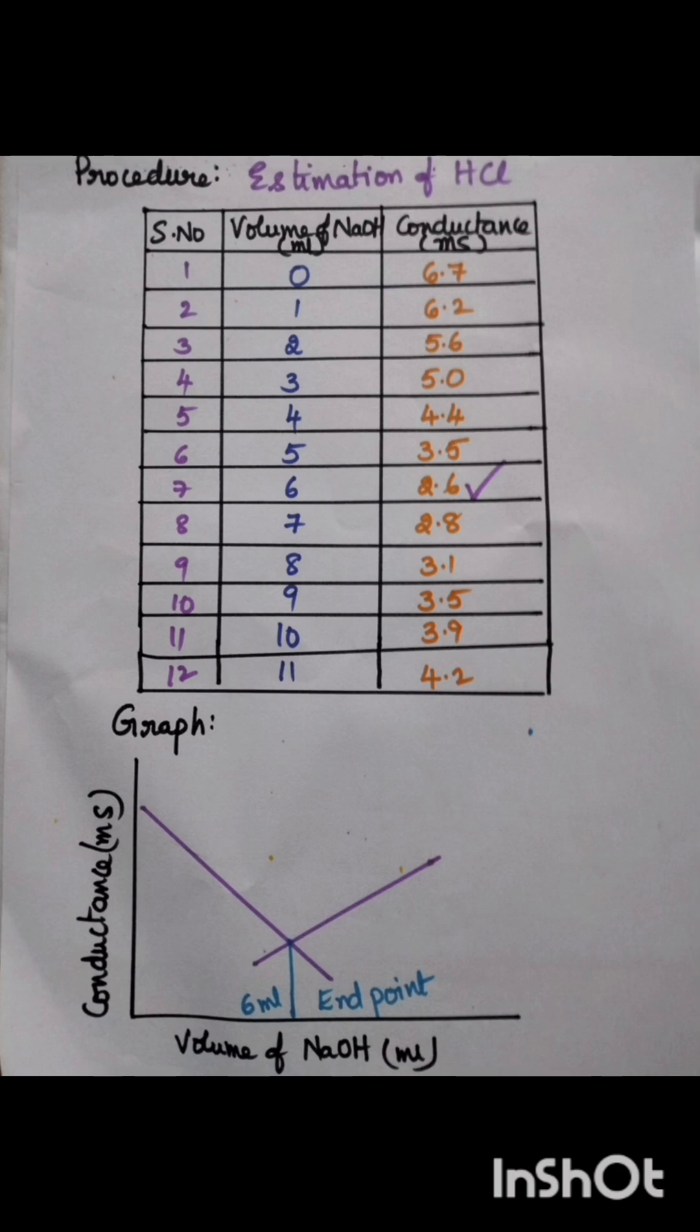Generally, a table is drawn between volume of NaOH and the conductance. From the table it is very clear that initially the conductance of HCl is very high and slowly it decreases. After reaching the minimum value, again the conductance increases.